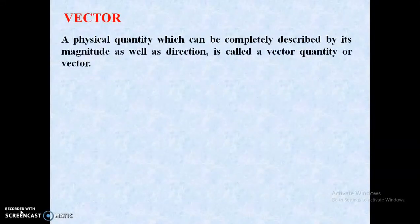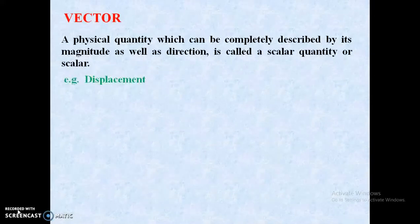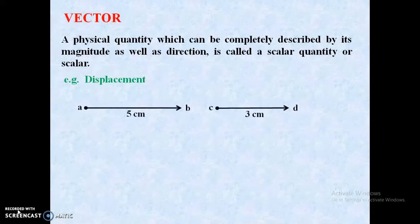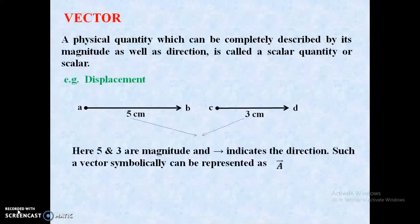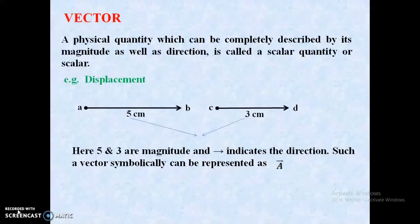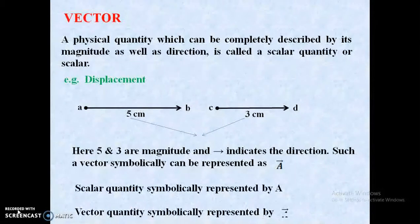Second, vector. A physical quantity which can be completely described by its magnitude as well as direction is called a vector quantity or vector. For example, displacement. Displacement of a particle: the first particle moves from A to B, and the second particle from C to D. Their magnitudes are 5 cm and 3 cm respectively. The arrow shows the direction of each particle. So 5 and 3 are the magnitudes, and the arrows indicate the direction. Such a vector quantity is symbolically represented by A with an arrow. Scalar quantity is represented by A, and vector quantity is represented by A with an arrow.